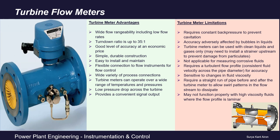They carry certain disadvantages: they require constant back pressure to prevent cavitation, and accuracy is adversely affected by bubbles in the liquid. Turbine flow meters can be used with clean fluids and gases only — it may be necessary to install a strainer on the upstream side to prevent damage from particles. They definitely cannot be used for corrosive fluids.